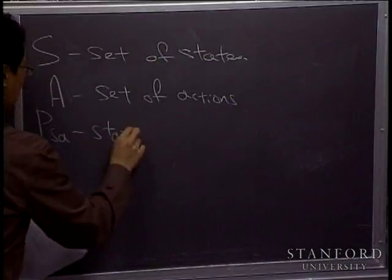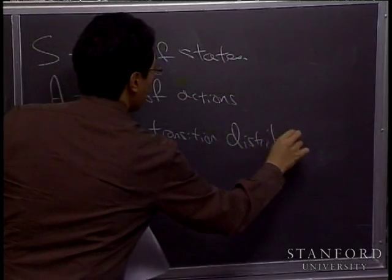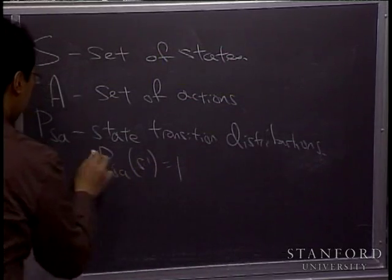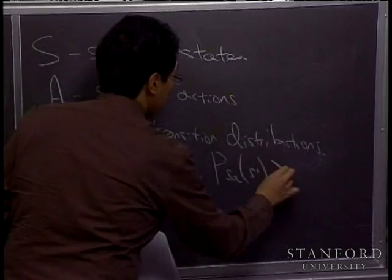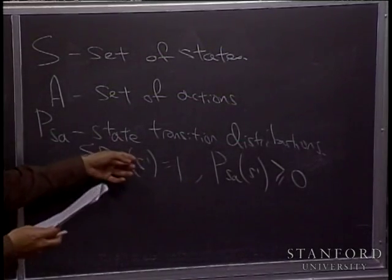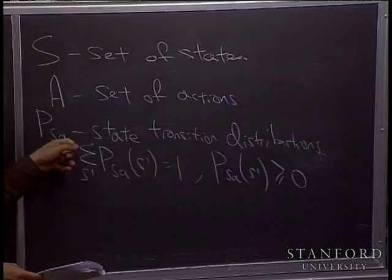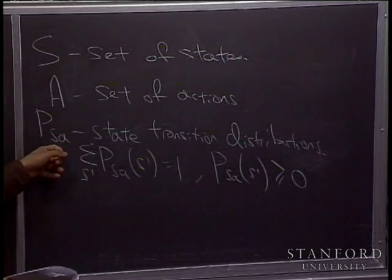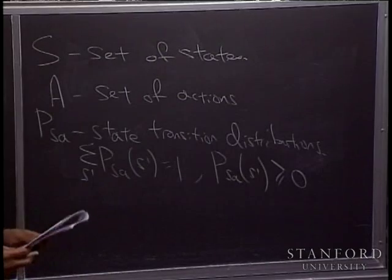P_SA are state transition distributions. For each state and each action, this is a probability distribution: the sum over S' of P_SA(S') equals one, and P_SA(S') is greater than or equal to zero. P_SA gives the probability distribution over what state you would transition to if you take action A in state S — a probability distribution over states S' that you might reach.